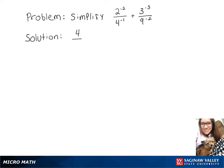Which gives us 4 to the 1 on top, or just 4 over 2 squared, plus 9 squared over 3 to the third.